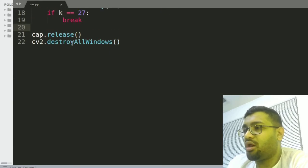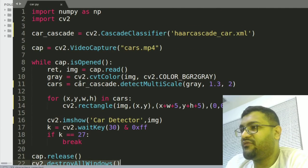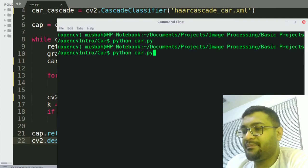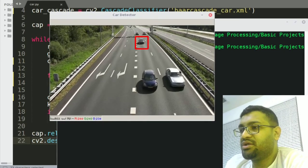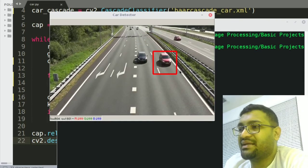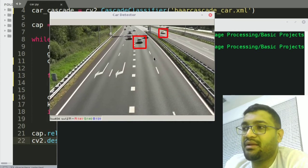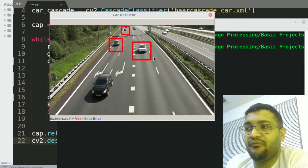So I'll run the program again just so we know how it runs. So you can see how the cars are being detected. Notice the number of cars we are able to detect in one frame—I'm able to get four or five cars in one frame which is really good.